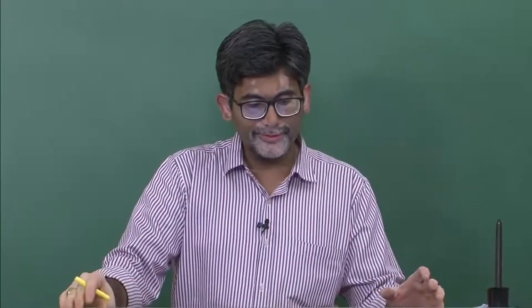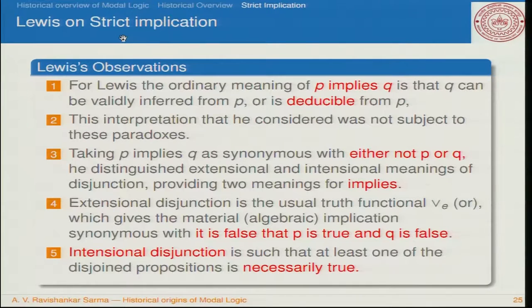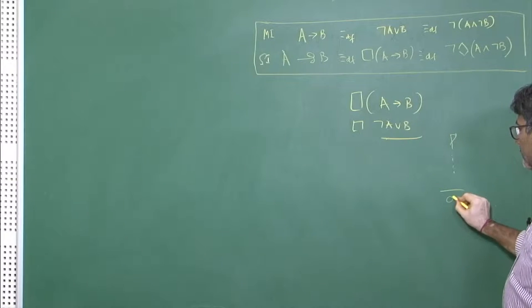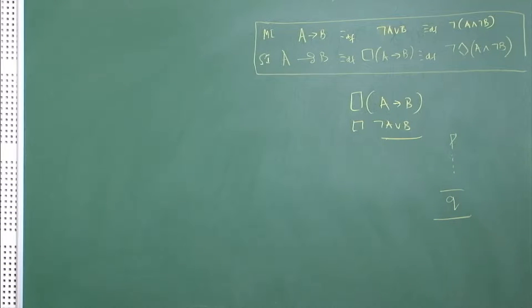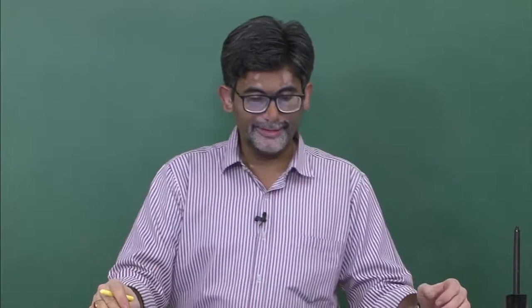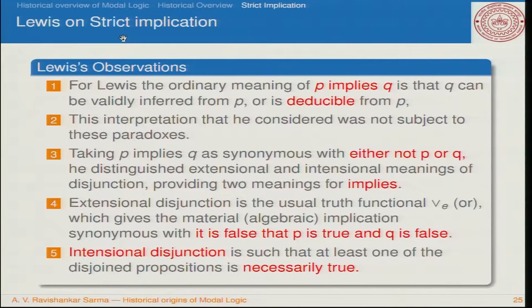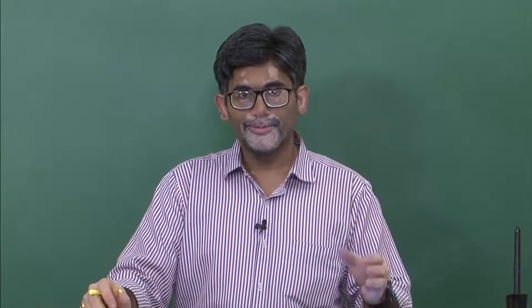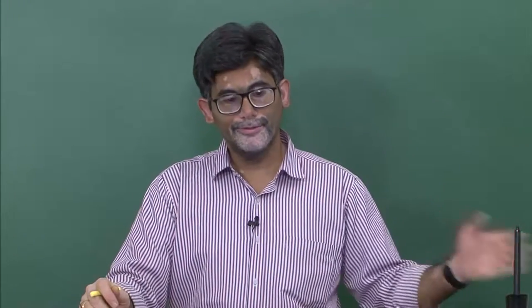These are some important observations of C. I. Lewis on strict implication. The ordinary meaning of 'P implies Q' is that Q can be validly inferred from P — that is, Q is deduced from P. Lewis is unhappy with whether deduction is captured by material implication. The interpretation of P implies Q as 'not P or Q' he considered to be subject to paradox. The paradoxes are: a true proposition is implied by any strange proposition, meaning all tautologies come as outcomes of any contingent proposition; and a false proposition implies anything.